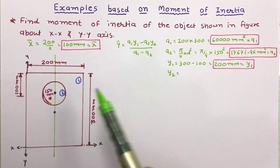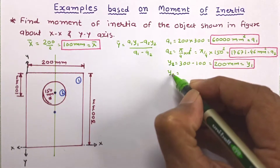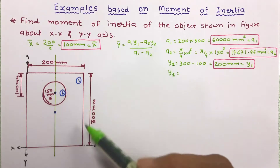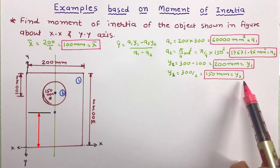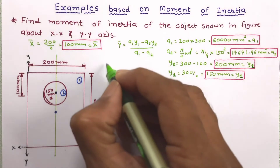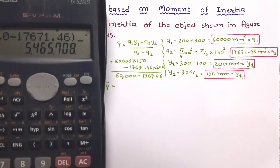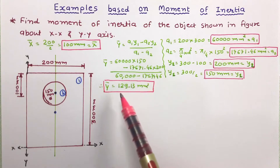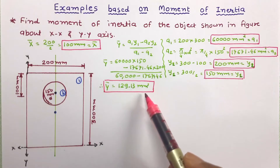Now for y2, the centroid of the circle from the xx axis. This distance is half of the relevant dimension, giving y2 equal to 150 mm. Now equating all values of a1, y1, a2, and y2 into the y-bar equation, and accounting for the subtraction of the circle, the value of y-bar is obtained as 129.13 mm.